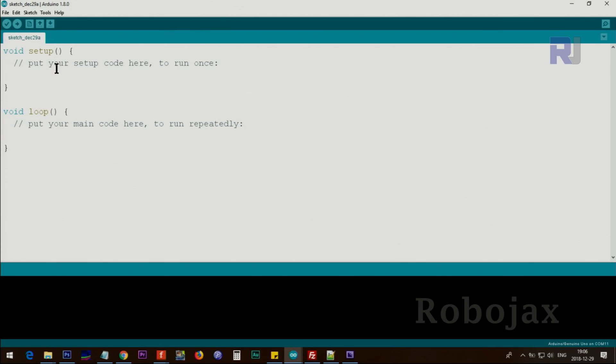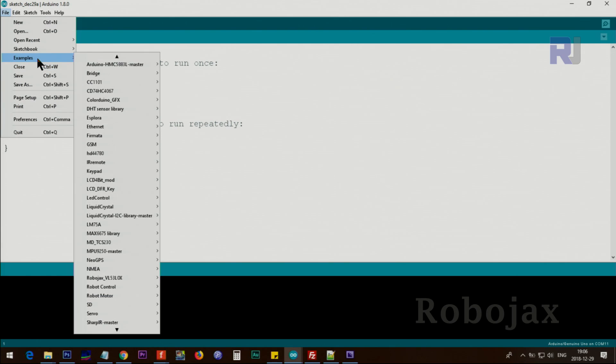To run or control the servo, click on File, Examples, and scroll down until you see Servo. Here there is one Sweep, one is Knob. Let's open first the Sweep.